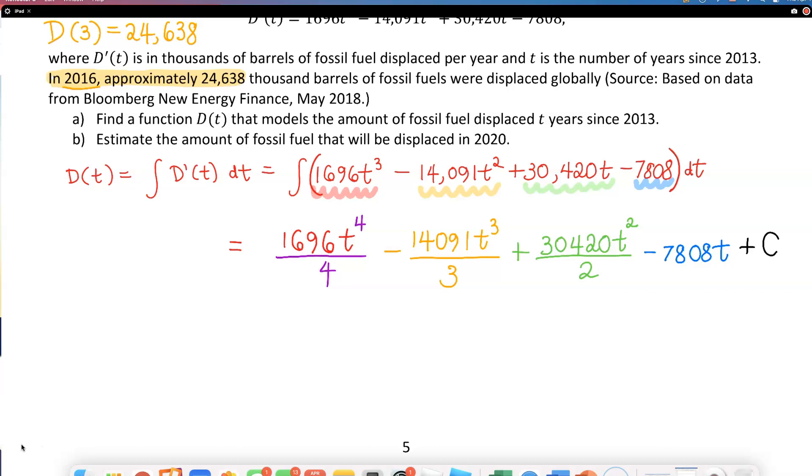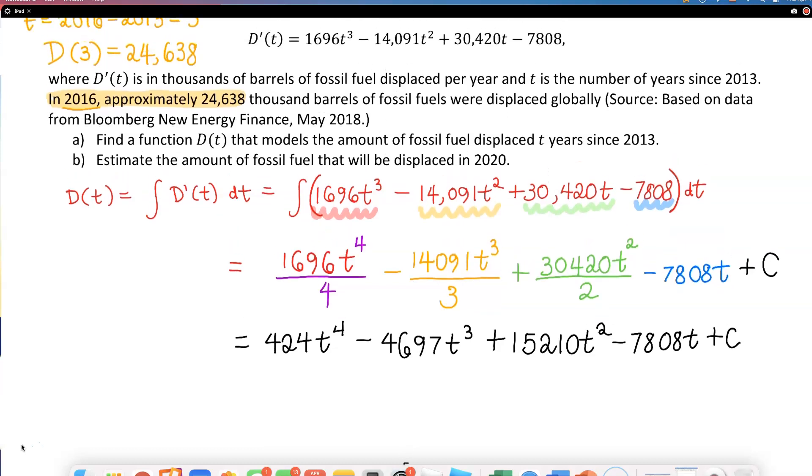Now let's see if I can simplify this by dividing some of these numbers. 1696 divided by 4 is 424t⁴. 14,091 divided by 3 is 4697t³. 30,420 divided by 2 is 15,210t². Minus 7808t plus C. This is D(t).